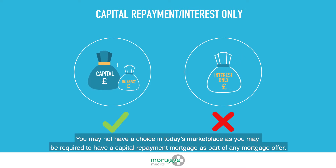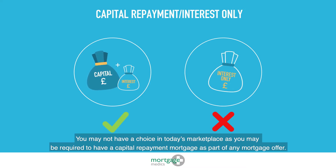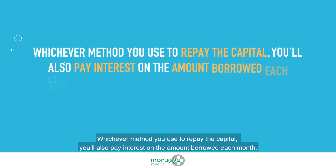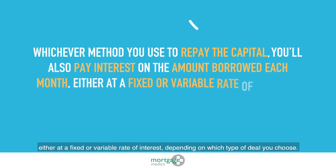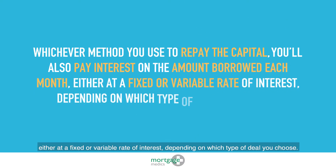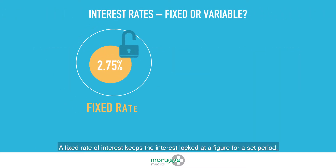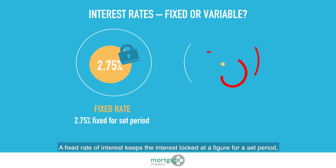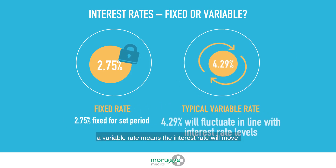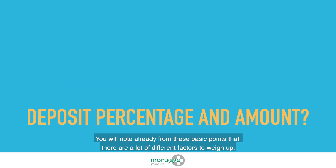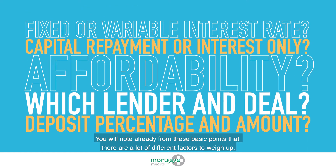You may not have a choice in today's marketplace, as you may be required to have a capital repayment mortgage as part of any mortgage offer. Whichever method you use to repay the capital, you'll also pay interest on the amount borrowed each month, either at a fixed or variable rate of interest depending on which type of deal you choose. A fixed rate keeps the interest locked at a figure for a set period, while a variable rate means the interest rate will move in line with general fluctuations in interest rate levels.